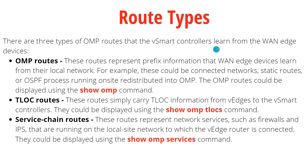What are the different route types that vSmart controller learns from vEdges? The first type is OMP routes. These routes represent prefix information that vEdge devices learn from their local network — connected networks, static routes, or OSPF processes running on-site redistributed into OMP. These are the service-side VPN routes: VPN 1000, VPN 2000, any of the service-side VPNs. Those routes are OMP routes, and they can be displayed using the show OMP command.